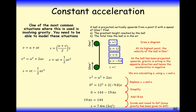Something to bear in mind is that when you use 9.8, your answer is only accurate to two significant figures because the value for acceleration due to gravity G has been approximated to two significant figures. Your answer is therefore only approximate to two significant figures — it could go to three, but won't be as accurate.